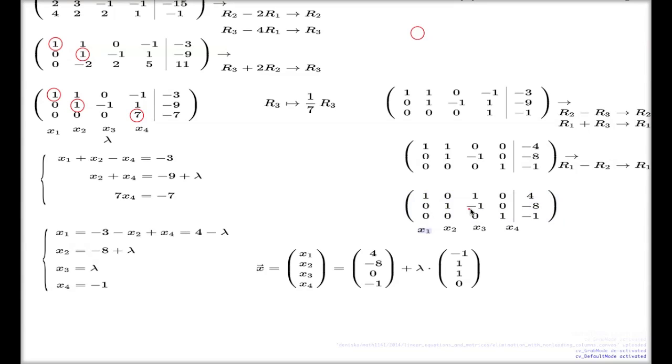Second line gives you, well, second line gives you just a lambda value because it's a non-leading column. Remember, we parametrize that.